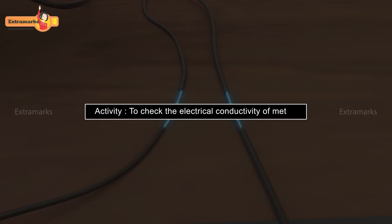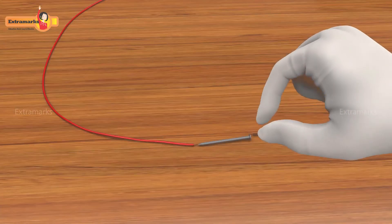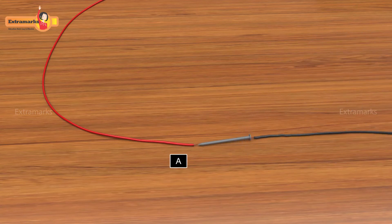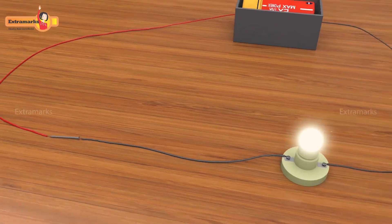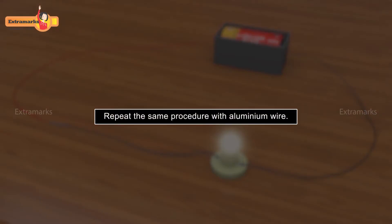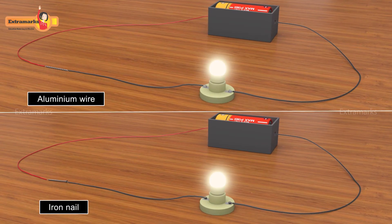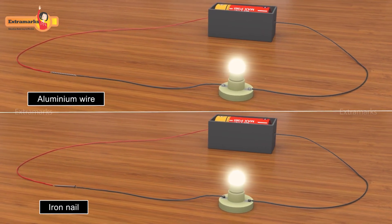Let us perform another activity to check the electrical conductivity of metals. Take an iron nail and an aluminum wire. Now connect the iron nail in the open ends of wires A and B in the circuit. Notice the bulb glows when the iron nail is connected. Repeat the same procedure with aluminum wire. You will find that the bulb glows when iron nail and aluminum wire are connected.